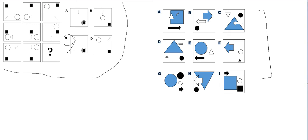The bigger shape is blue and the shape at the bottom is always black. But in option C, the shape at the bottom is not black — it's blue. So C is the odd one out. It does not fit into the sequence. Based on the shapes and their colors, we found that C doesn't fit.